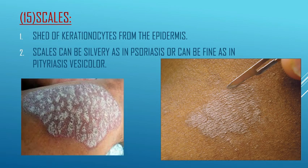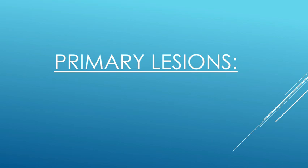The next primary skin lesion is scales. In scales, there is shedding of keratinocytes from the epidermis. Scales can be silvery, as in psoriasis, or as seen in pityriasis versicolor. These are the 15 primary skin lesions.